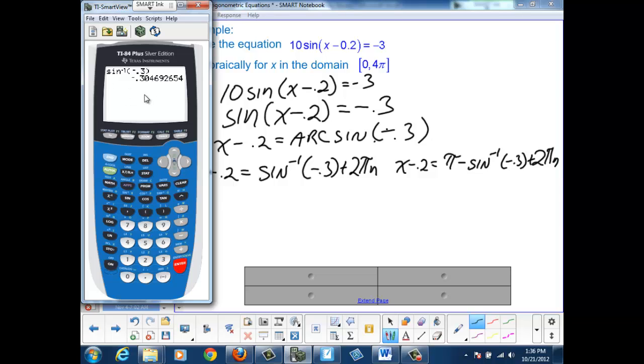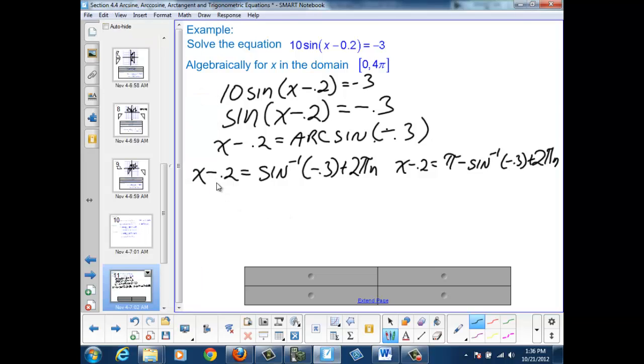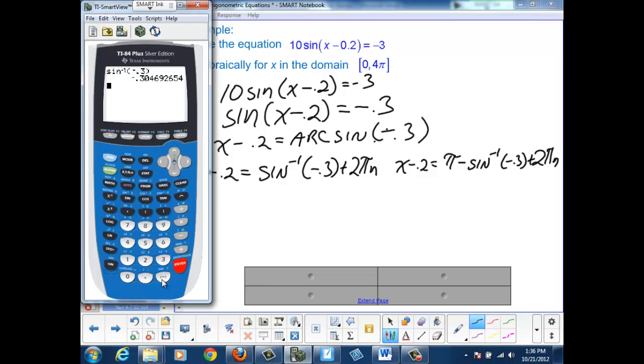And I see that's -0.304692654. For my first solution, I need to add 0.2 to that. So I will take 0.2 plus this value, and I will get -0.104692654.